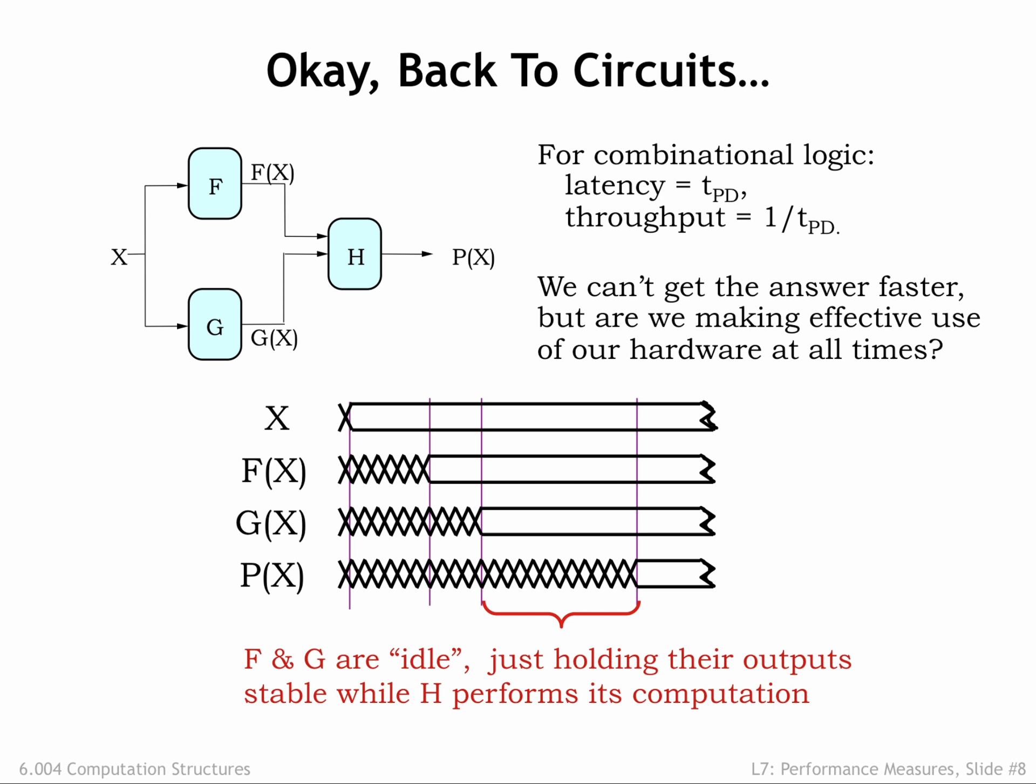In other words, can we divide the processing of the combinational circuit into two stages, where the first stage computes F and G, and the second stage computes H? If we can, then we can increase the throughput of the system.